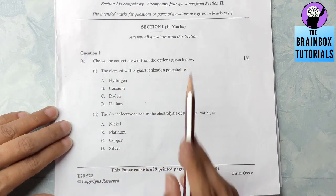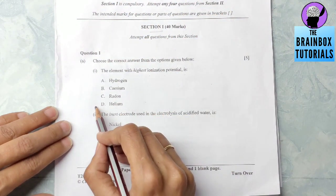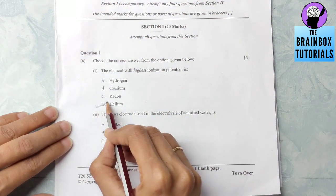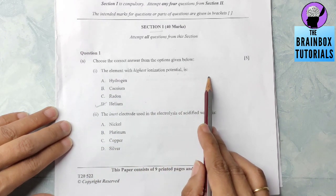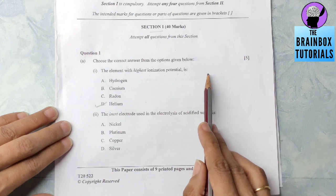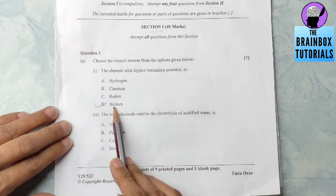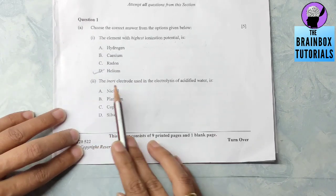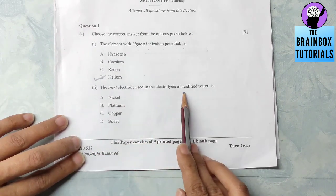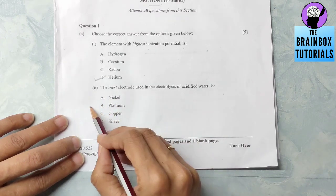Section 1, Question number 1. First question: the element with highest ionization potential. The element with highest ionization potential will be helium. The reason is the ionization potential increases in period from left to right and decreases in group, so helium will have the highest ionization potential. Number two: the inert electrode used in the electrolysis of acidified water is platinum.